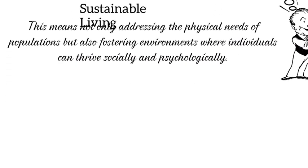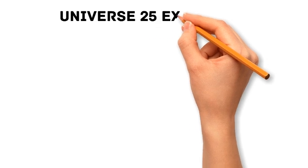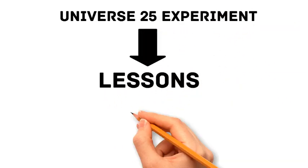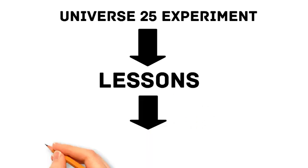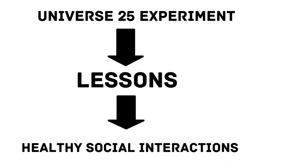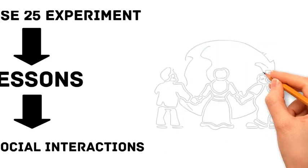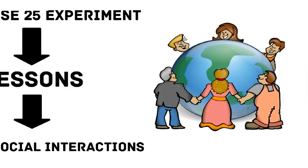As we move towards increasingly crowded urban centers, the lessons from Universe 25 Experiment become ever more relevant. We must focus on creating spaces that support healthy social interactions and individual well-being. By doing so, we can avoid the pitfalls of overpopulation and ensure that our societies remain vibrant and resilient.